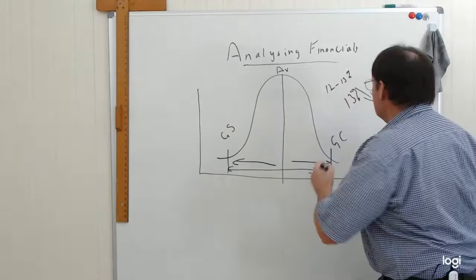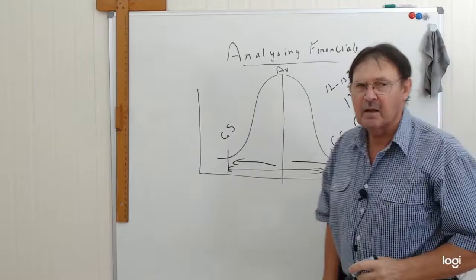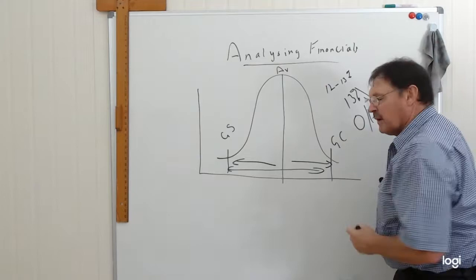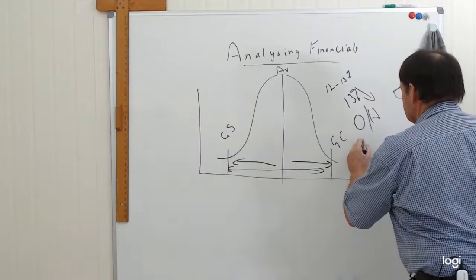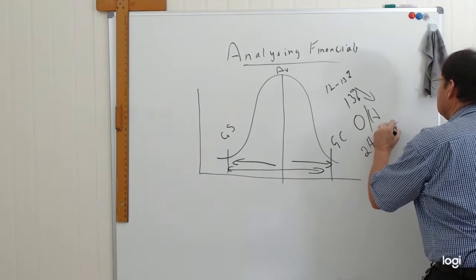Now the other one is simply overheads. Again, the same thing. There's about a 12 to 13% difference between the best performing business with regard to overheads and the worst performing business. So when you combine those two together, there's about a 24% difference between the best and the worst.